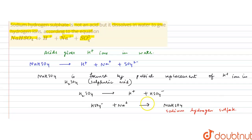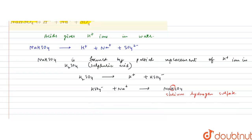Due to the presence of hydrogen atom in NaHSO4, that is from the acid, it behaves like an acid.